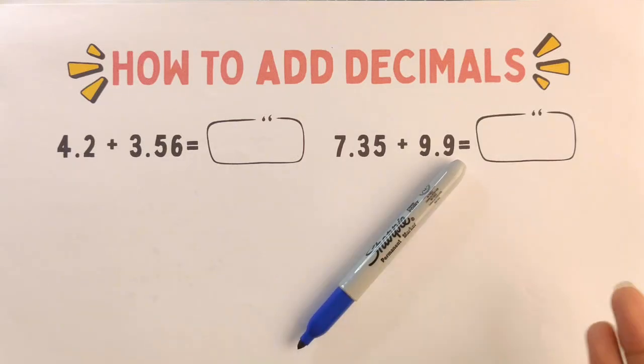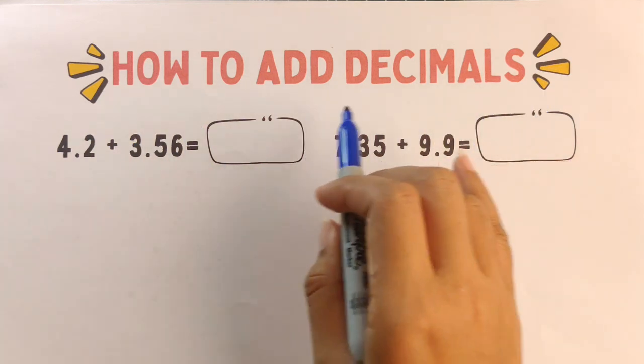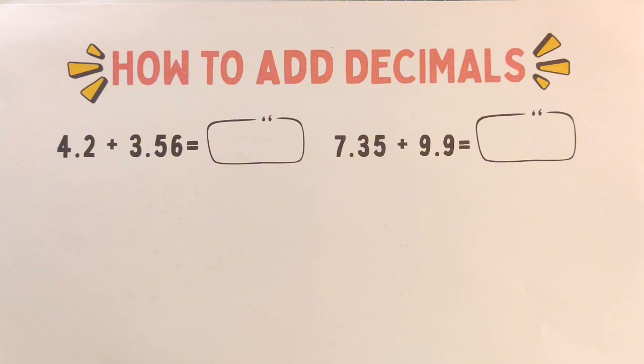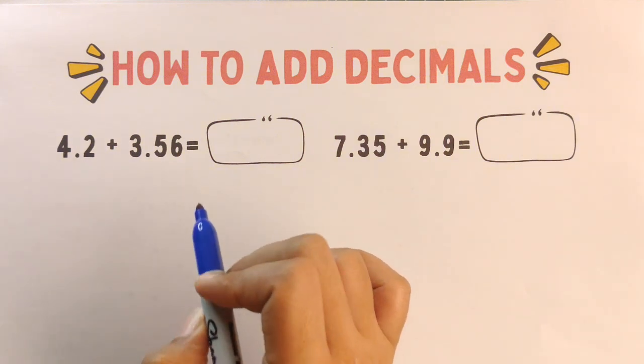Hello everyone, welcome to Math Tutorial by Teacher Con. Today we're going to learn how to add decimals. It's easy once you understand how to line up the numbers correctly. So let's dive in. Remember to add decimals, step number one: line up the decimal points vertically. So for example, let's add 4.2 and 3.56.